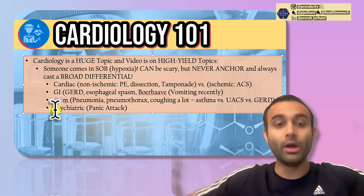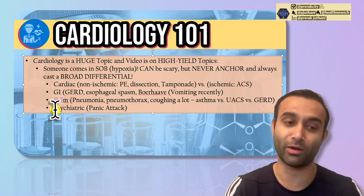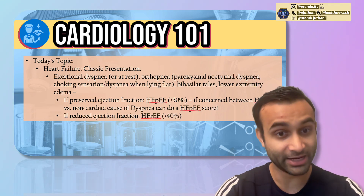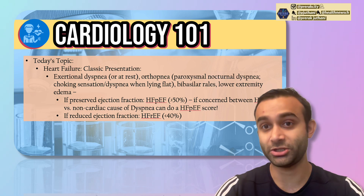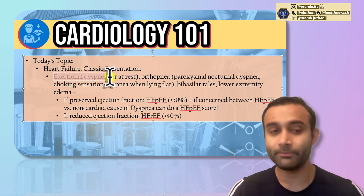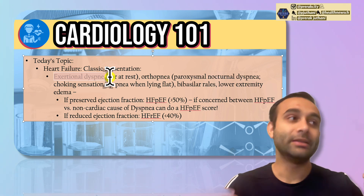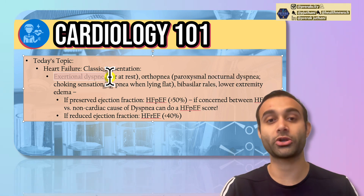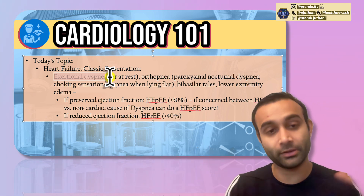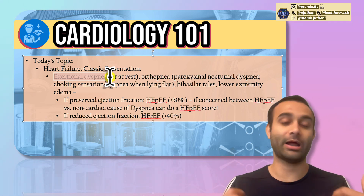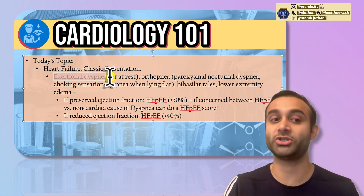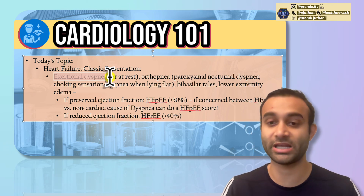Today we're going to be talking about heart failure. So if someone comes in with hypoxia and you think it's actually heart failure, how are you going to diagnose that? The classic presentation of heart failure is that someone comes in with exertional dyspnea — they walk and then they get short of breath. This is because when you walk, you increase the cardiac demand on your heart. Your blood has to pump to all the areas of your body more readily, activating aerobic respiration cycles, so you need to get oxygen from the lungs to those regions that need it.